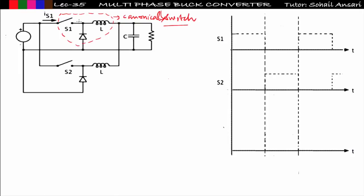Multi-phase means these canonical switches are connected in parallel. When two canonical switches are connected in parallel to share a common load — here the load is resistive — that type of converter is known as a multi-phase converter. Since this is a DC-to-DC buck converter circuit, two buck converters connected in parallel are known as a multi-phase buck converter or interleaved buck converter. So the question arises: why are these two connected in parallel?